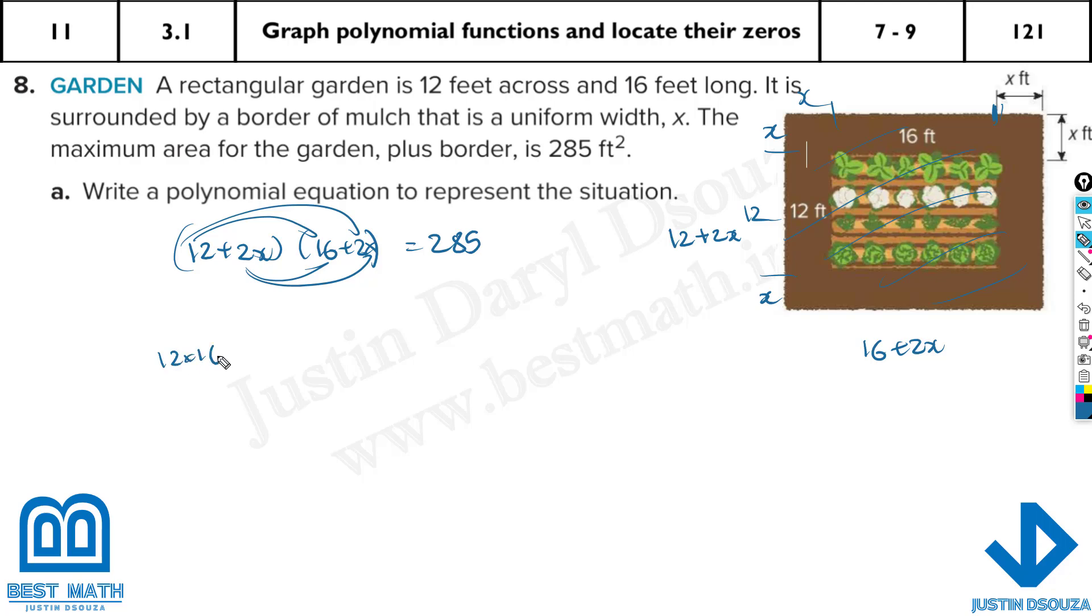So we have to do binomial multiplication, FOIL method. Here you can also see they want the maximum area. So whatever is the dimension for this can be easily found by solving this equation. Let's solve it up. 12 times 16 is 192. Then we have 24x + 32x + 4x². That is equal to 285.